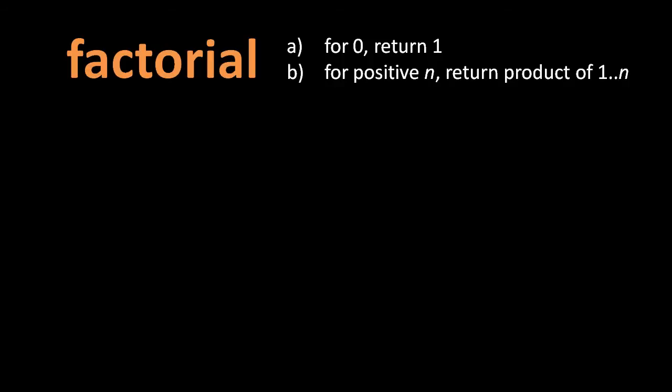Now let's write a function that might actually be useful, a function that computes and returns a factorial. In case you don't recall, a factorial of a number takes that number and multiplies it by all integers down to 1. So the factorial of 3, for example, is 3 times 2 times 1. The factorial of 0, however, is a special case which always returns 1.